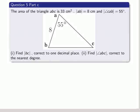The area of the triangle ABC is 33 centimetres squared. The length of AB is 8 centimetres, and the angle CAB is 55 degrees. There we have the diagram for this part C, and the values are filled in there. We have to find BC, the base of the triangle, correct to one decimal place, and then we have to find ABC, the angle at B, correct to the nearest degree.